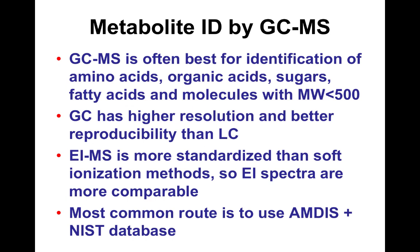GCMS works for molecules with molecular weight less than about 500–600 Daltons — a fairly severe limitation. It works nicely for amino acids, organic acids, some sugars, and some fatty acids, but not for hydrophobic or heavy molecules. A key advantage of EIMS over LCMS is that it's highly standardized — EI spectra collected on different instruments across different generations are still very similar, making it possible to use very large spectral libraries.